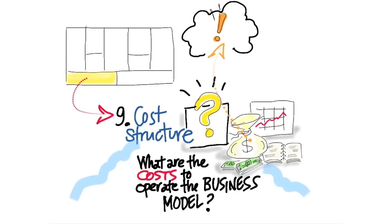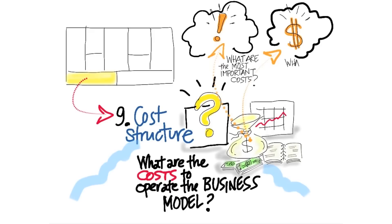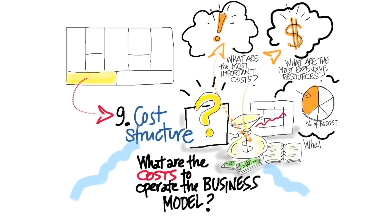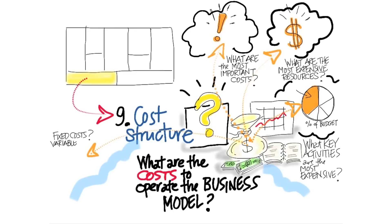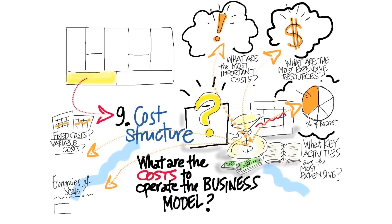You want to think about what are the most important costs you need to worry about. What are the most expensive resources you're going to need to pay for? And what key activities are the most expensive? Then you want to ask the typical accounting things: what are fixed costs? What are variable costs? Are there economies of scale? You want to start getting a good handle on what it is that will end up costing you money to run your business.